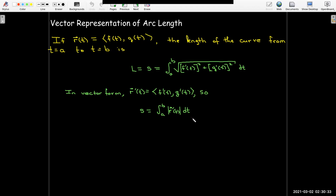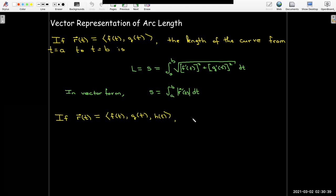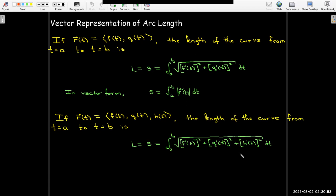And moreover, if we have three component functions, so if we have a space curve with a vector representation with component functions f, g, and h, then the length of the curve is again just applying the Pythagorean theorem or the distance formula. I would take the square root of the sum of the squares of the components of r prime, which is again just the length of r prime of t. So this is a very useful, very compact form for calculating arc length.